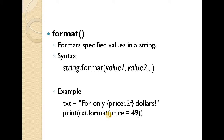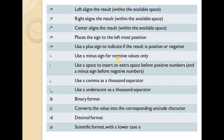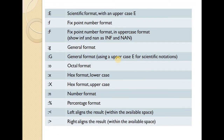format — it formats specified values in a string. For example, txt.format(price=49) with format specifier '{:.2f}'. It supports left-align, binary format, decimal format, comma as thousands separator, octal format, general format, and percentage format.